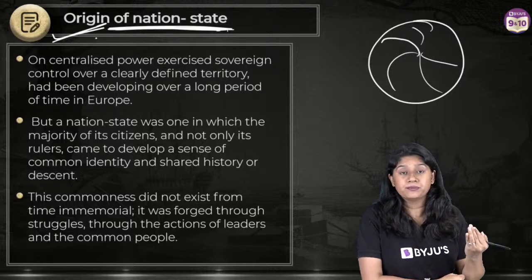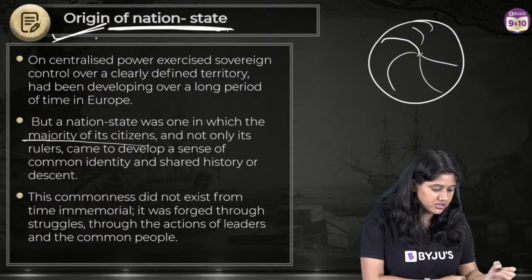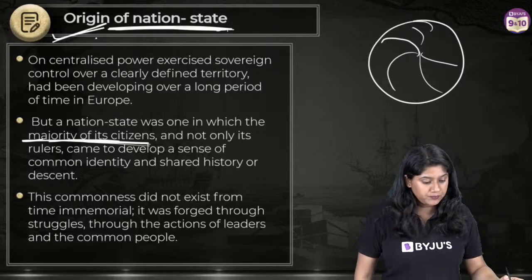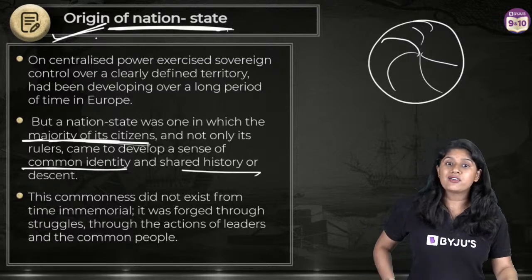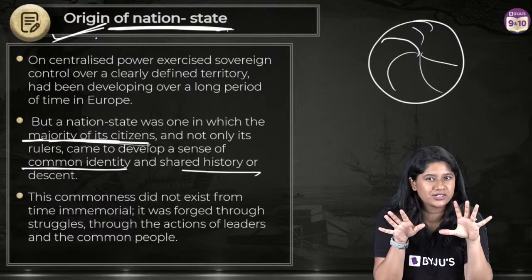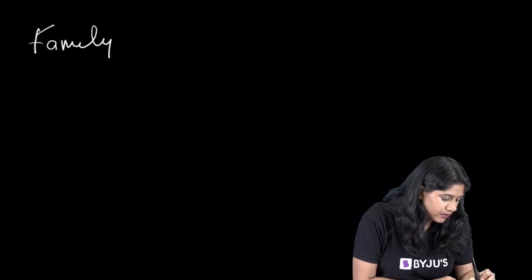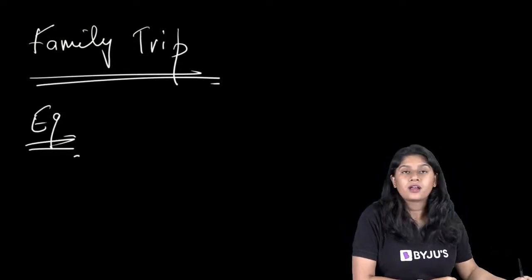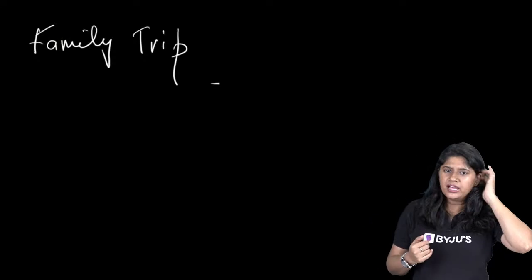Let's understand its origin. There are a few elements. First, the majority of the citizens — they are there as citizens, not as a ruler, and they have a sense of common identity and a shared history. For example, when you leave your country and visit a foreign country, whenever you see someone of Indian origin who speaks the same language or is from the same hometown, you have a sense of closeness — that is a feeling of common identity.